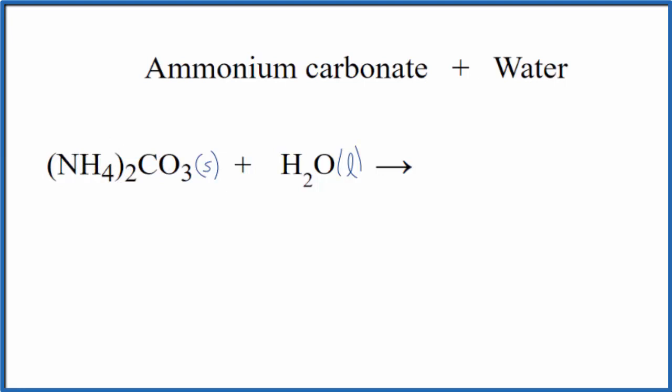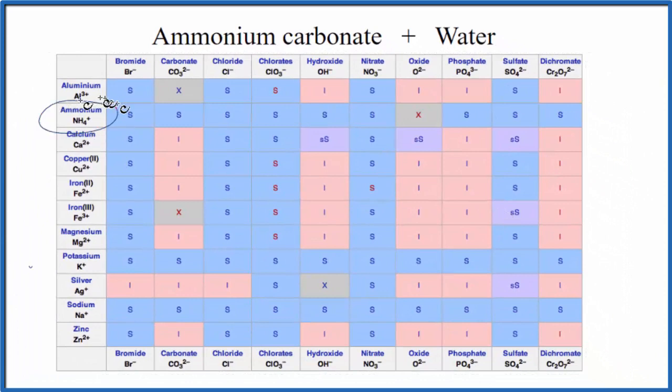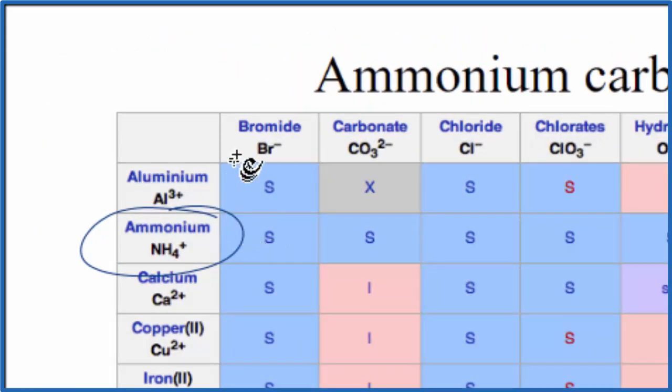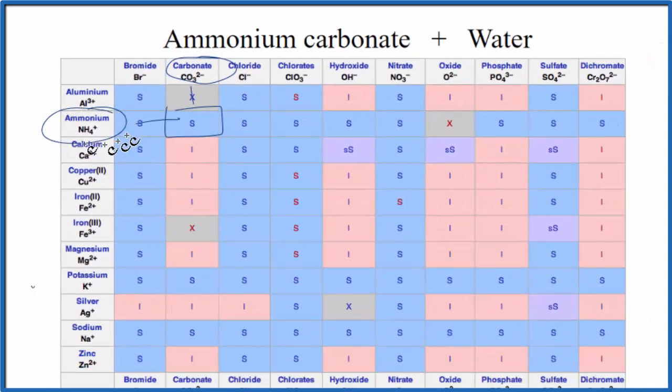We could also look at a solubility chart if we wanted to check that as well. Here's the ammonium ion, that NH4 plus, and carbonate right over here. So we go down and over. And that S, that means it's soluble. So it's going to dissolve just like the solubility rules tell us. In fact, if you look at compounds that have the ammonium ion, in general, they're all soluble in water. Good thing to remember.